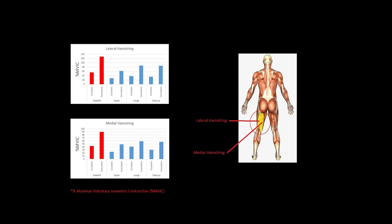And for the medial hamstring, you can see that the concentric portion of the deadlift activates it 90% MVIC, whereas it only reaches about 60% for any of the other movements.